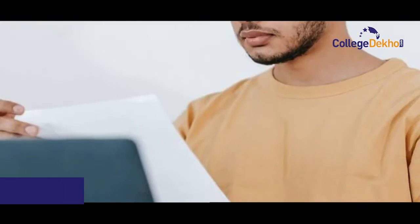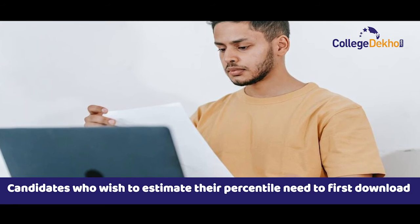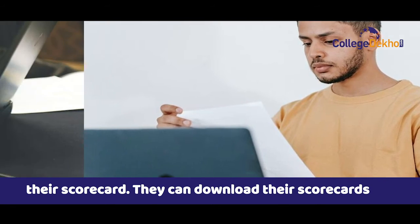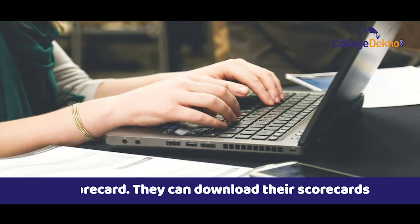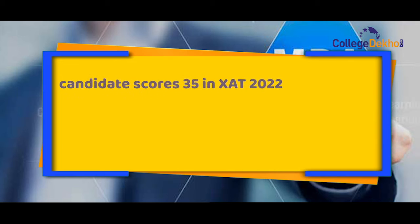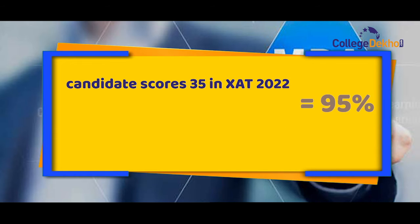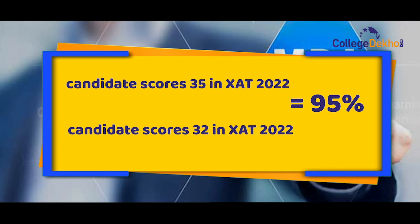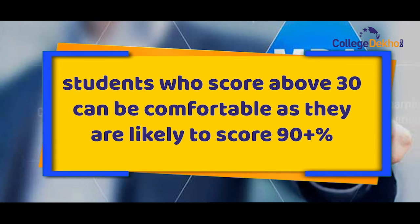XAT 2022 score versus percentile analysis: Candidates who wish to estimate their percentile need to first download their scorecard from the official website. For example, if a candidate scores 35 in XAT 2022, it can be estimated as 95 percentile. Similarly, if a candidate scores 32 in XAT 2022, the percentile would be an estimation of 93 percentile. Therefore, students who score above 30 can be comfortable.